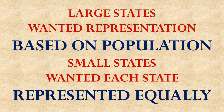On one side were people like James Madison from large states — states with big populations like Virginia — who believed representation should be based entirely on population, so a state with more people would get more representatives. People representing small states, like New Jersey or Delaware, were worried that big states would end up bossing small states around. So they were unwilling to agree to representation based entirely on population, and instead wanted each state represented equally in the government.